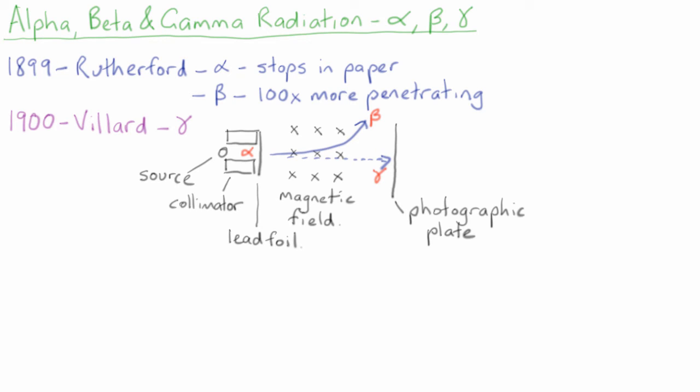In 1900, Becquerel measured the mass to charge ratio for beta particles and showed that it was exactly the same as an electron, and hence it was decided that beta particles must be electrons.